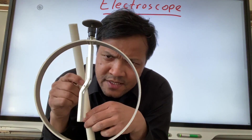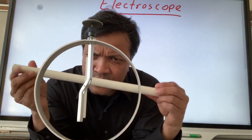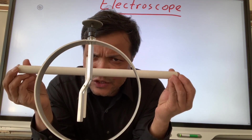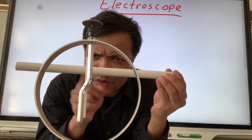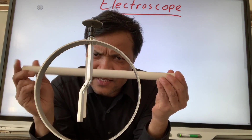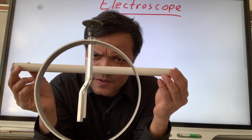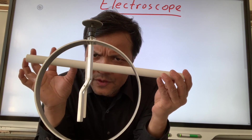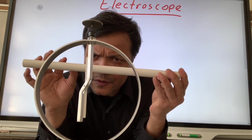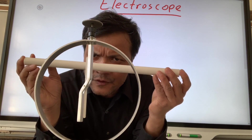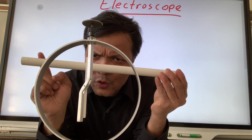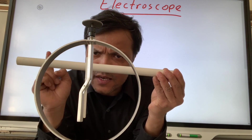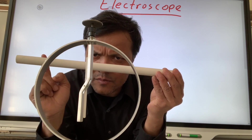I have a PVC pipe. This is an insulator. What makes it an insulator? It is not a conductor. That means electrons cannot move freely on this pipe. If somehow you can transfer some electrons onto this pipe, these electrons won't be able to move freely because an insulator does not allow electrons to move freely.